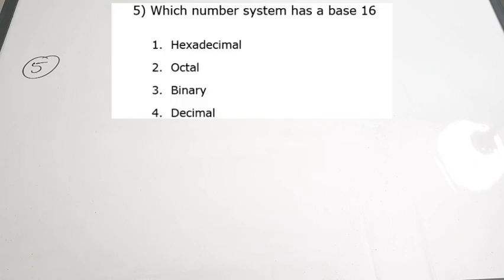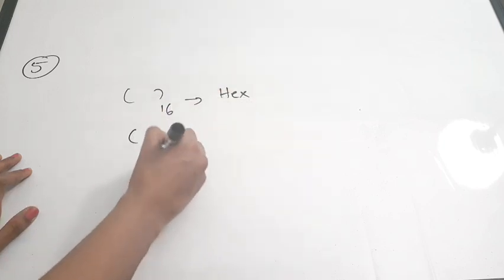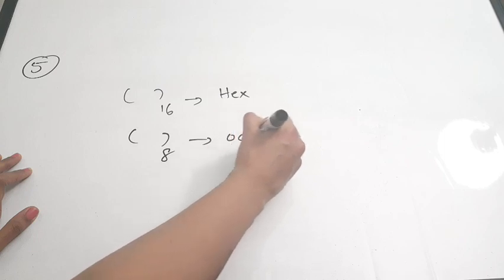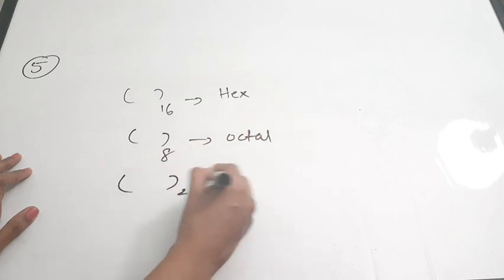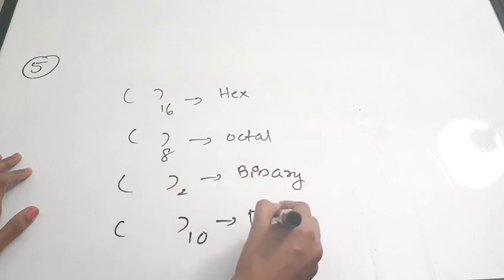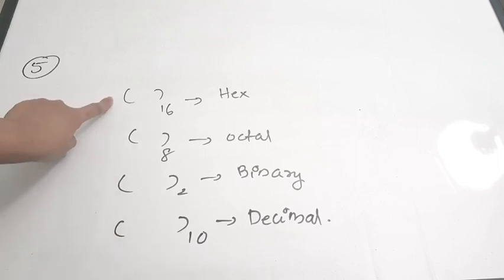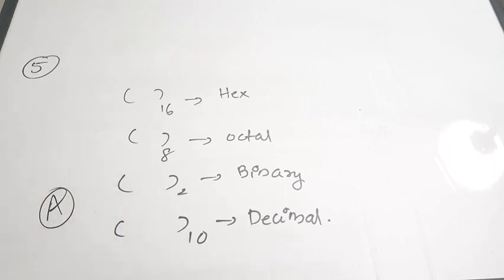The fifth question: which number system has a base of 16? The answer is hexadecimal. To remember: base 2 = binary, base 8 = octal, base 10 = decimal, base 16 = hexadecimal. Simple but important. The correct answer is option A.